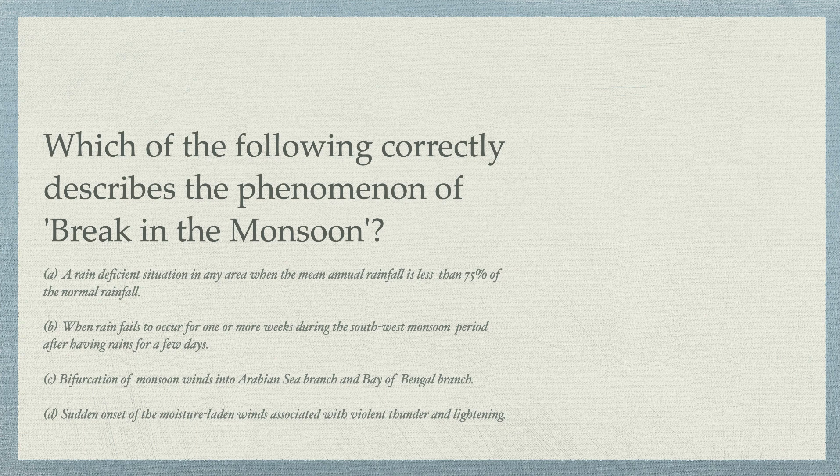The question asks: what is the meaning of 'break in the monsoon'? Option one: a rain deficit situation in any area when the mean annual rainfall is less than 75% of the normal annual rainfall. Option two: when rain fails to occur for one or more weeks during the southwest monsoon period after having rain for a few days. Option three: bifurcation of monsoon wind into Arabian Sea branch and Bay of Bengal branch.